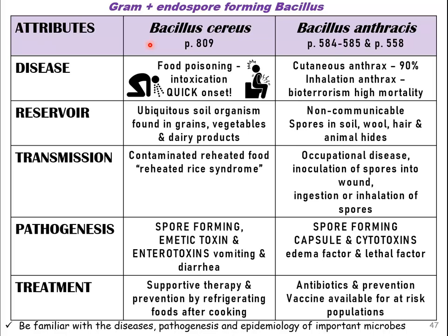Depending upon the strain, you can have the emetic toxin, which is going to act very, very quickly. It is also heat stable. This is called reheated rice syndrome — foods have been cooked, the spores can make it through the boiling process, then they germinate, food is kept warm and then it makes its toxin. And even after you reheat that food, the toxin is heat stable, and so that causes vomiting within one to five hours.